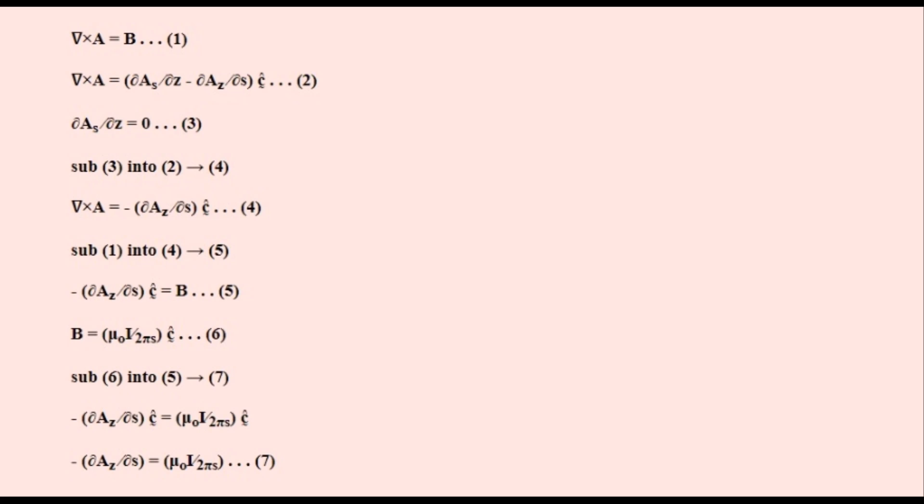A doesn't vary over the length of the wire due to symmetry, so its derivative over this direction, which is the Z direction, is set to zero. Substituting equation 3 into 2 gives us this new equation. Substituting equation 1 into 4 gives us this equation. This is the value of the magnetic field as a function of the current in the wire, as a vector circulating around the wire. Substituting this equation 6 into 5 gives us this equation.